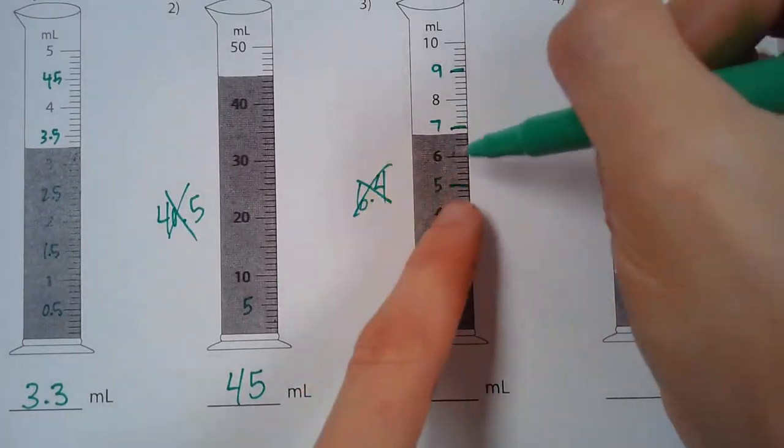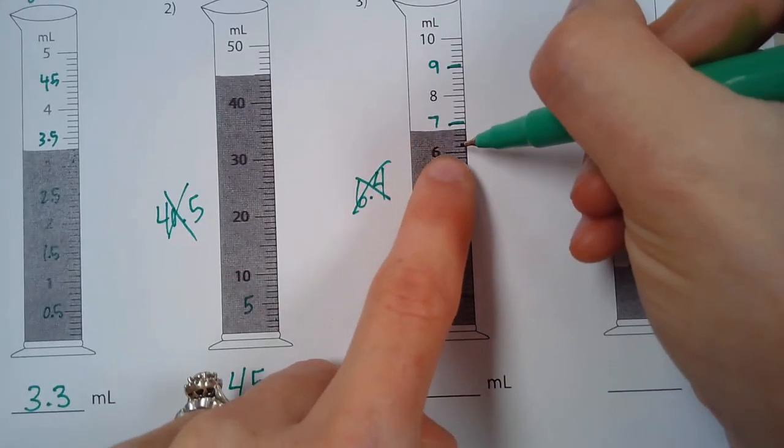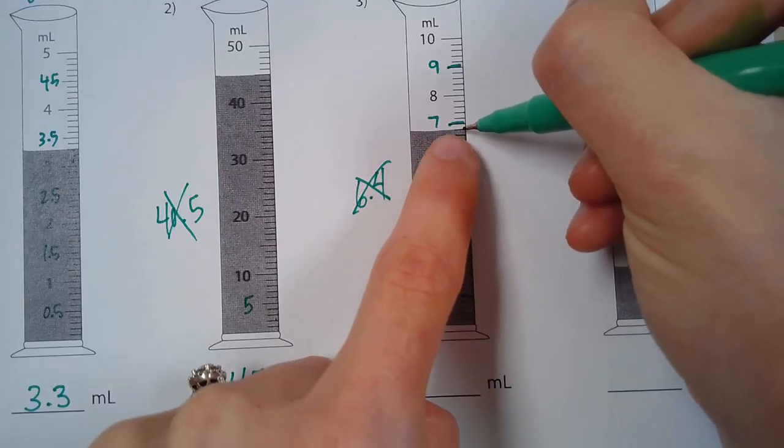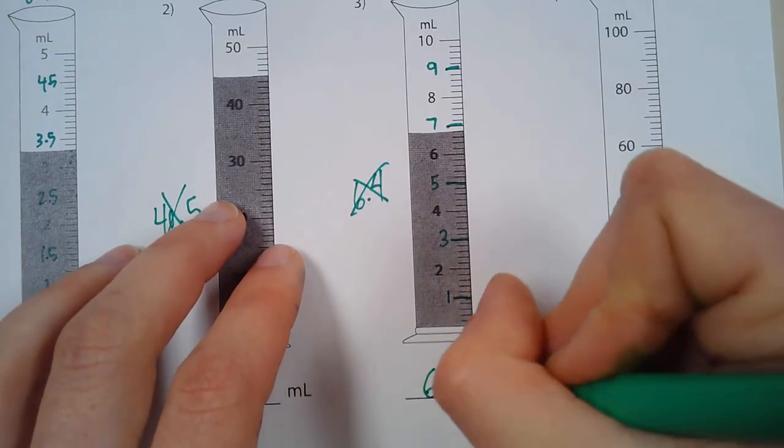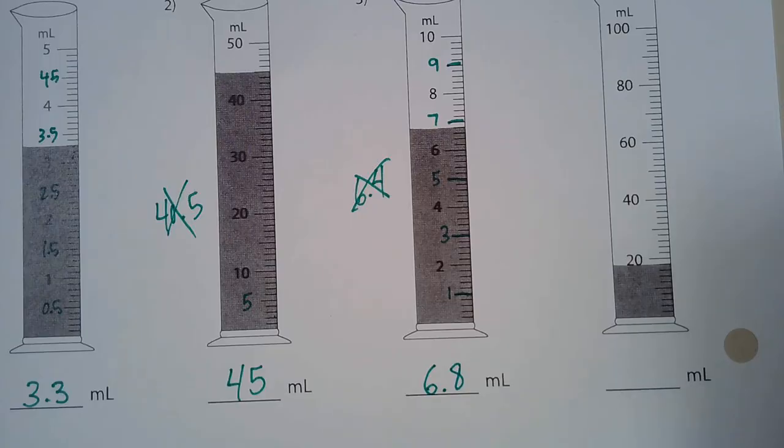So go back to where our liquid is, this shaded part, 6, 6.2, 6.4, 6.6, 6.8. And that makes sense.